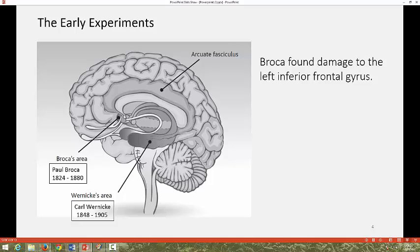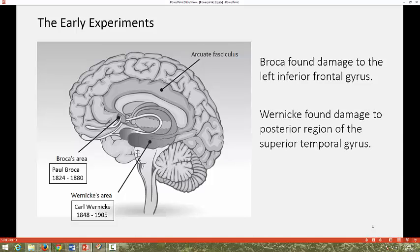Carl Wernicke, also in the 19th century, worked with patients who had experienced strokes and who had difficulties in understanding spoken language. Their vocabulary was wider than Broca's patient, but they tended to speak nonsensical words and sentences. Wernicke discovered that this was caused by damage to the posterior region of the superior temporal gyrus and suggested that this part of the brain affected our ability to understand and remember language. This part of the brain is known as Wernicke's area.